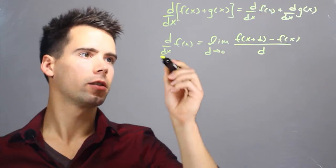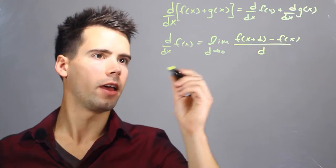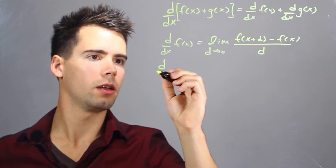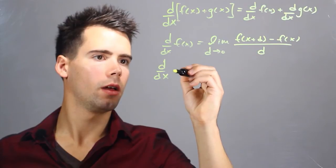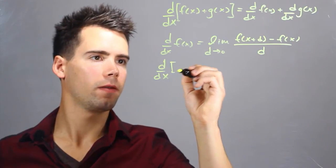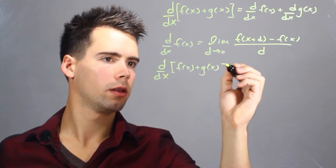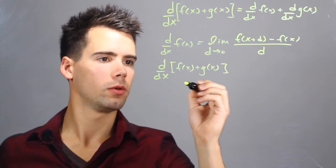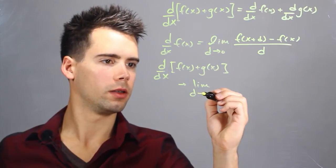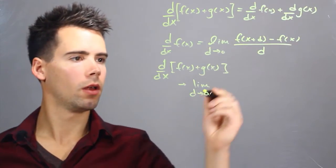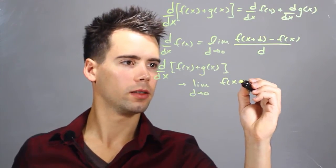Now if we apply this rule to both terms up here we find that d by dx of f of x plus g of x is simply equal to the limit as d approaches zero of f of x plus